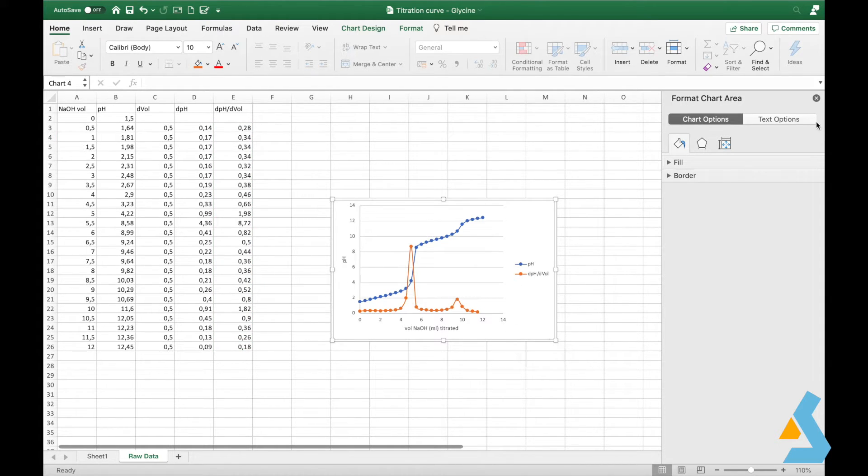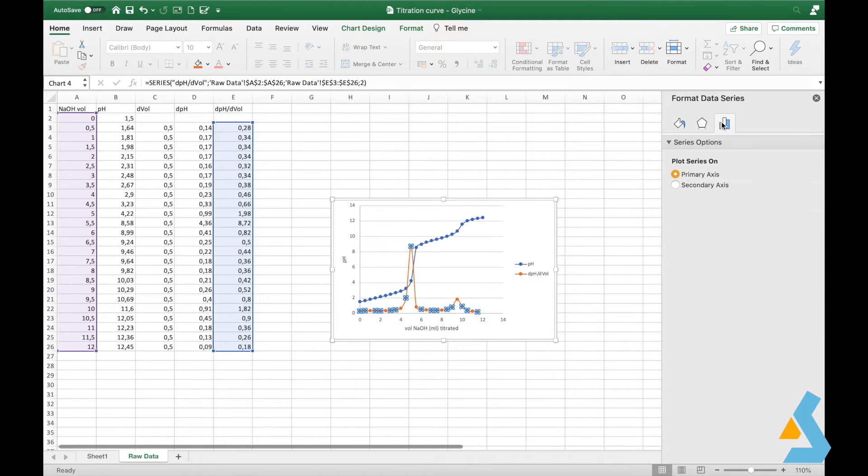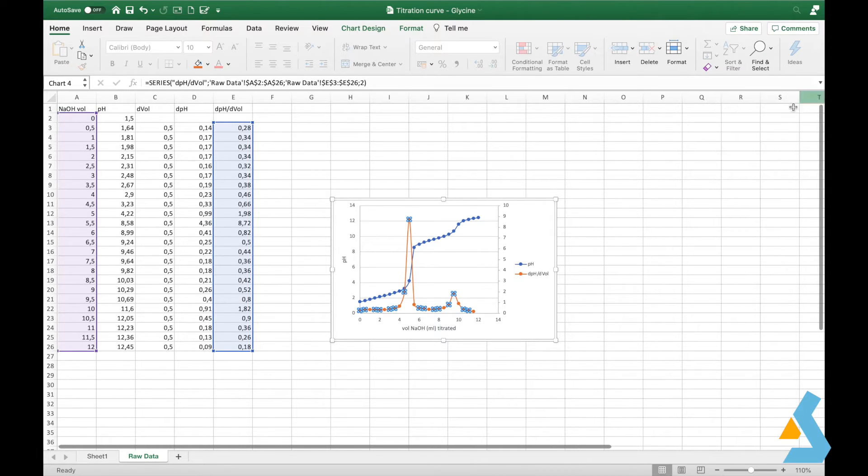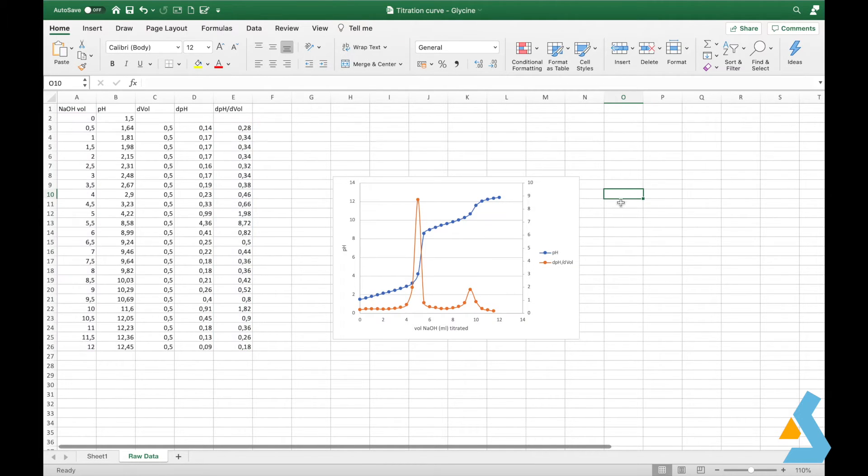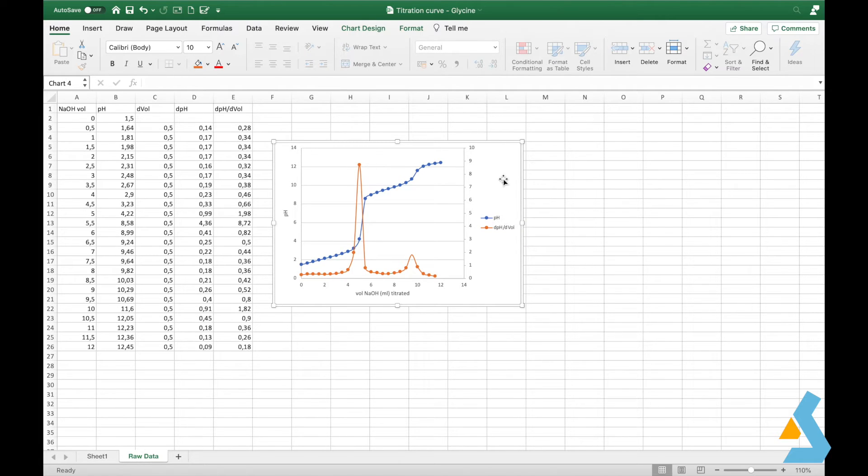In order to interpret your new curve better, you can add a secondary y axis. Just click format and go to plot series on secondary axis. The peaks we see in this derivative plot show us the equivalence points. We have two easily visible peaks.